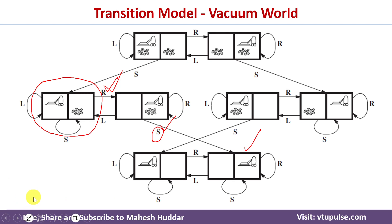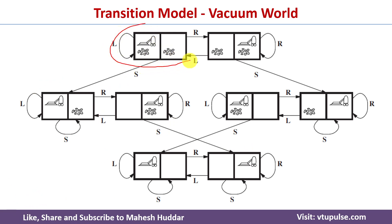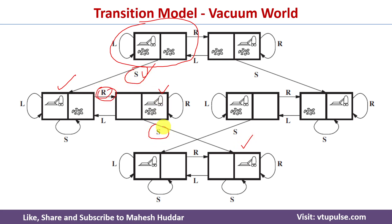Now assume the initial state is location A dirty, location B dirty, and the agent in location A. The best action here is Suck, which cleans location A. Then Right moves the agent to location B. Then Suck cleans location B, reaching the goal state. Total actions performed: Suck, Right, Suck — the total path cost to go from this initial state to the goal state is three.